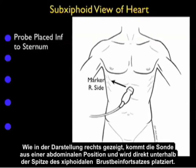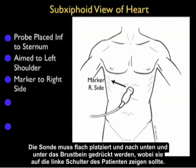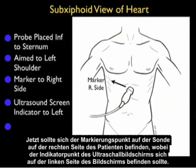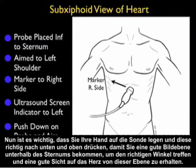As shown in the pictorial to the right, the probe is coming from an abdominal position placed just inferior to the xiphoid tip of the sternum. It's important to lay the probe flat and push down and under the sternum, aiming towards the patient's left shoulder. The marker dot on the probe should be over towards the patient's right side, with the caveat that the ultrasound screen indicator dot is over towards the left of the screen. It's very important to put your hands on top of the probe and really push down and up to get the good imaging plane underneath the sternum to make the angle to get a good view of the heart from this plane.